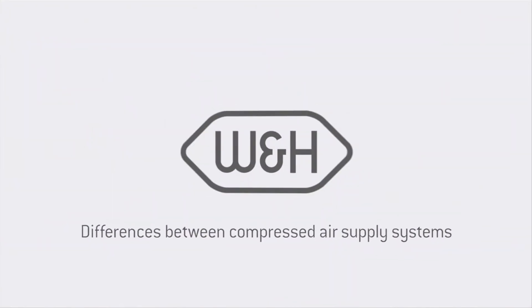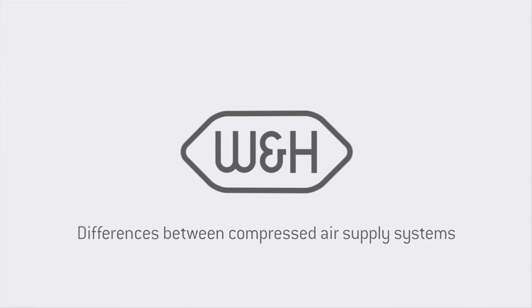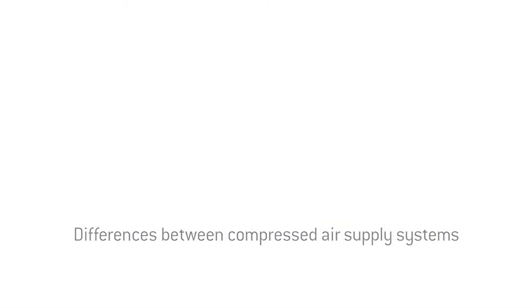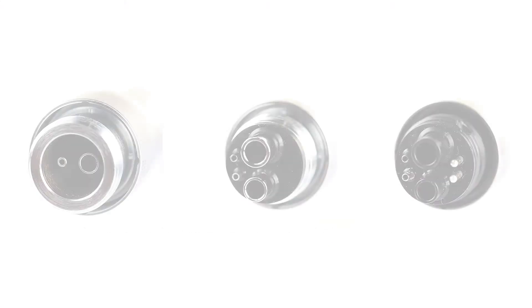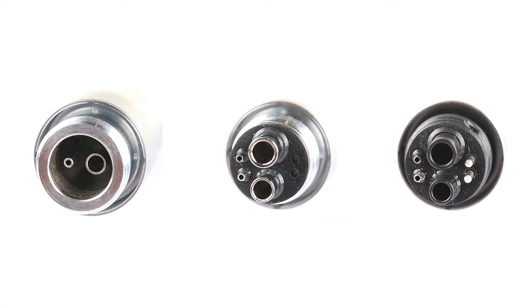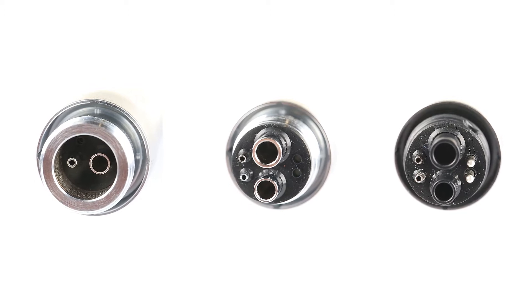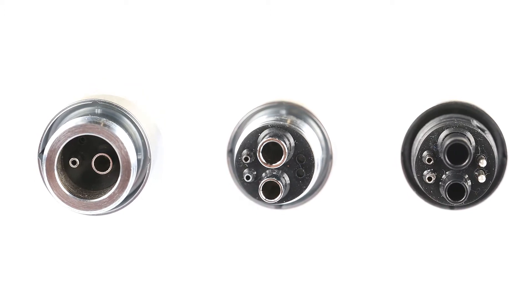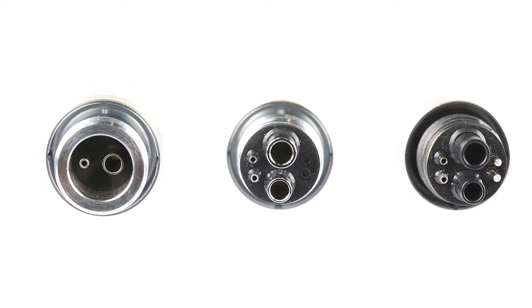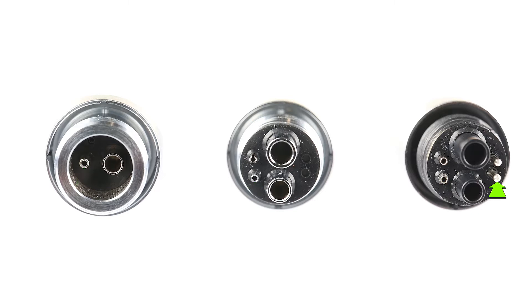Differences between compressed air supply systems. With air-driven transmission instruments like turbine handpieces and air motors, there are various possibilities of connections. These differ by the connection to the drive and exhaust air, the supply lines for the spray, and the electrical contacts for the light.